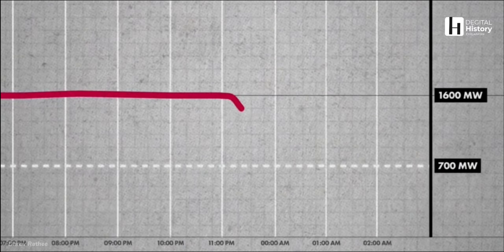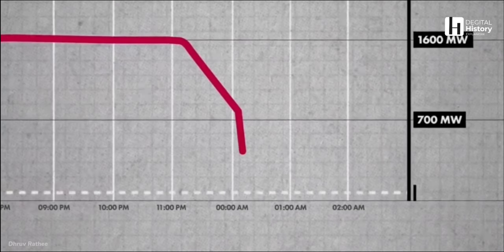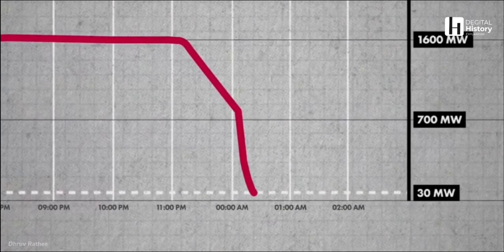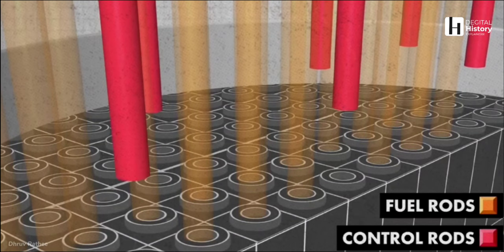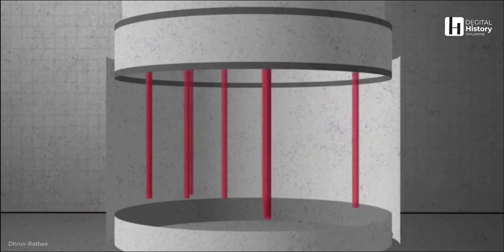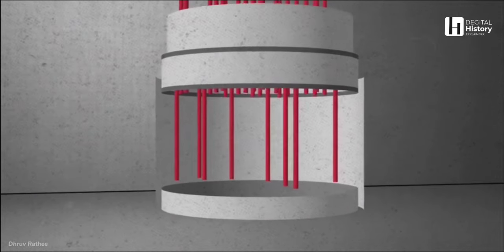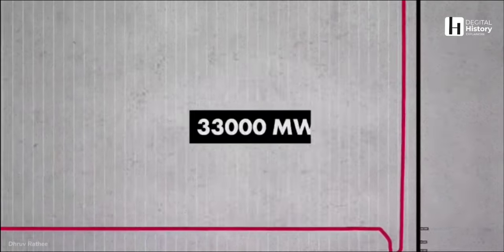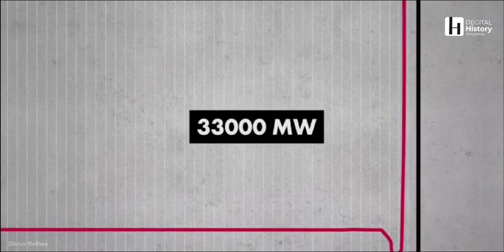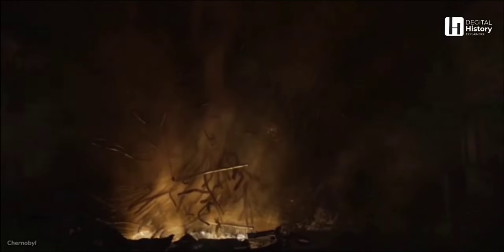During the tests, the plant's operators made a critical error by lowering the reactor's power too much. The experiment was supposed to demonstrate that even at low-power levels, there was enough cooling capacity to prevent a meltdown. However, the sudden drop in power caused an increase in temperature, which led to a steam explosion. The explosion caused the release of massive amounts of radiation into the atmosphere.